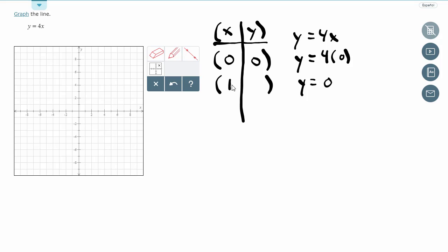And then I'm going to do the same thing for the other point. Write down my equation, y equals 4x. Replace x with the second x value I made up, which is 1. 4 times 1 is 4. And then I'm going to put that here for my output. So when x is 1, y is 4.